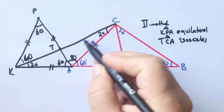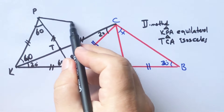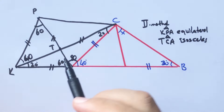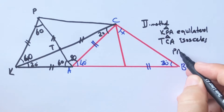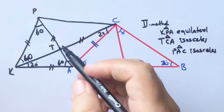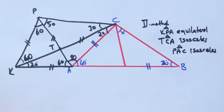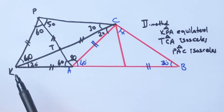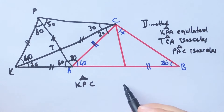Let's call this point T. Triangle TCA has an angle of 80 degrees, which means triangle TCA is an isosceles triangle. Therefore TC must equal AC. If we connect these two points, triangle PAC is also an isosceles triangle. So here must be 80 degrees and this angle must be 30 degrees. Triangle KPC and triangle ACB —